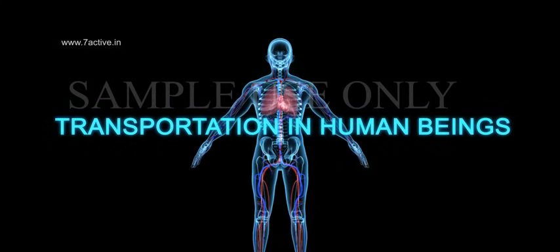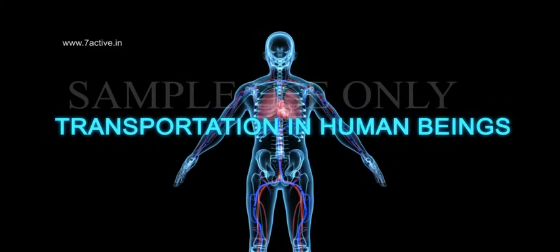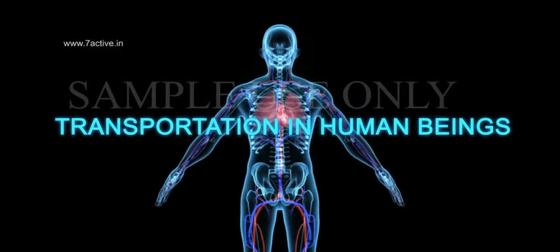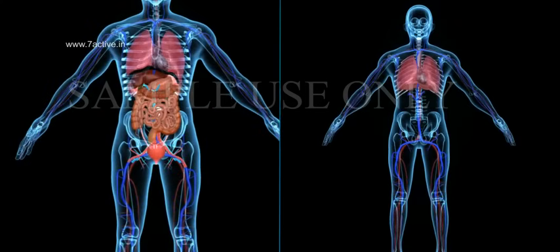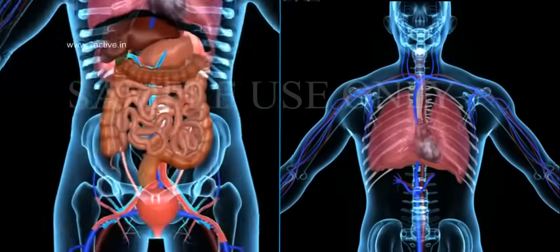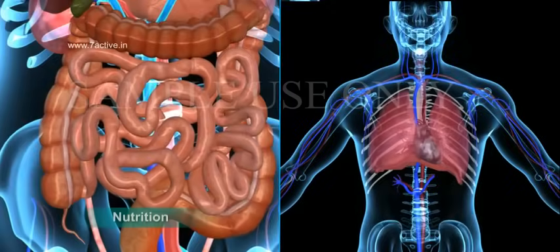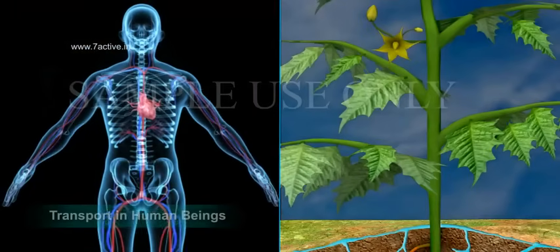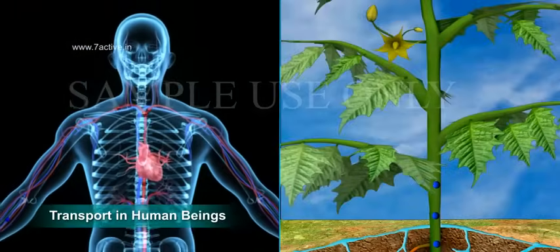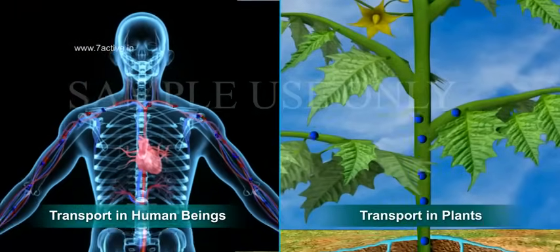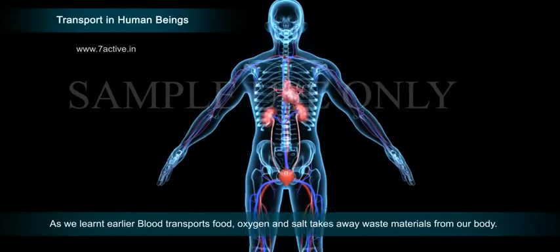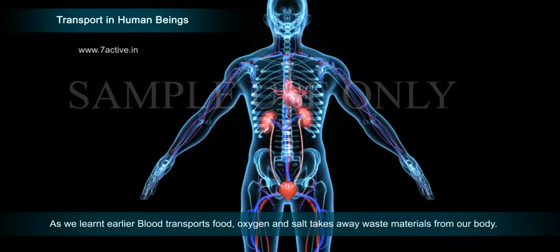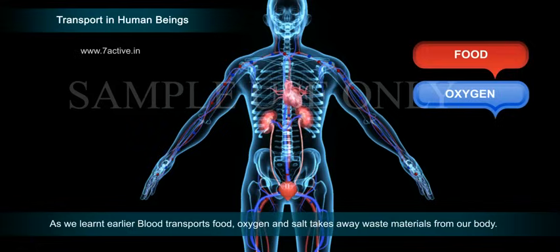Transportation in human beings. In our previous section we have learned about nutrition and respiration. Now let us discuss about transport in human beings and transport in plants. As we've learned earlier, blood transports food, oxygen and salts.